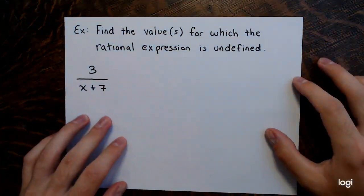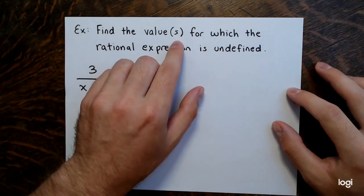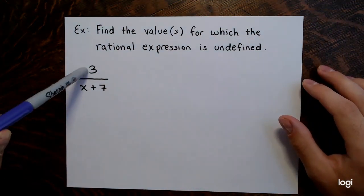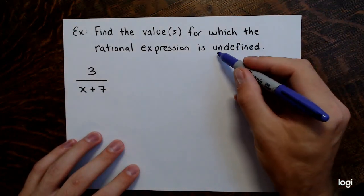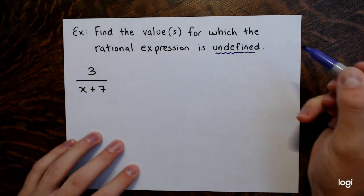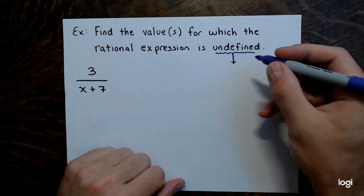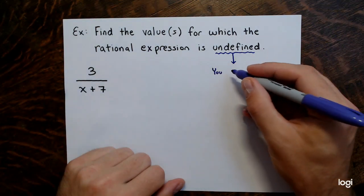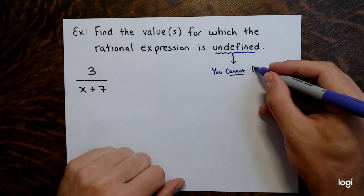Here's the first example. Find the value or values — there may be more than one — for which the rational expression is undefined. We have 3 over x plus 7, a polynomial divided by a polynomial. Now, when is a fraction not defined? You cannot divide by zero.